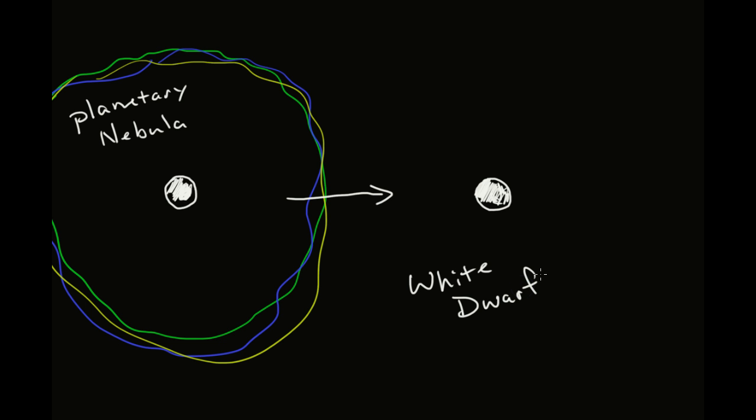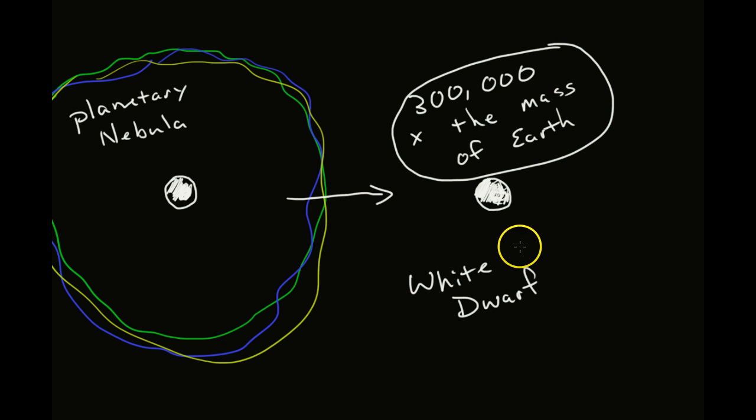And a white dwarf's pretty weird. It could be the size of Earth, but at the same time, it'll be like 3,000 times the mass of Earth. And so you get crazy amounts of gravity with this white dwarf. And it'll stay a white dwarf almost indefinitely.